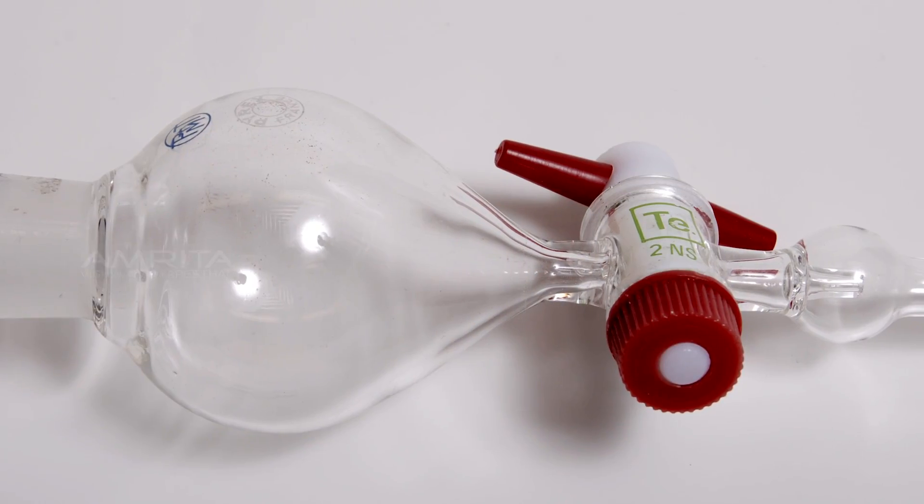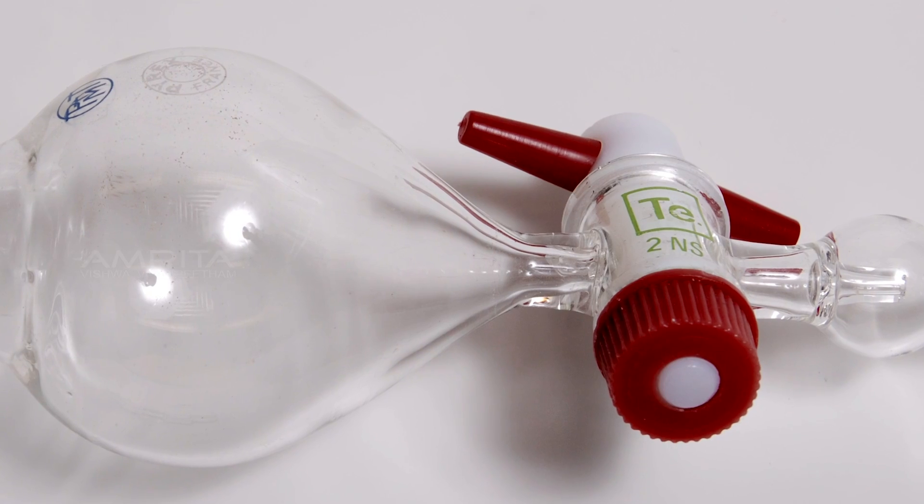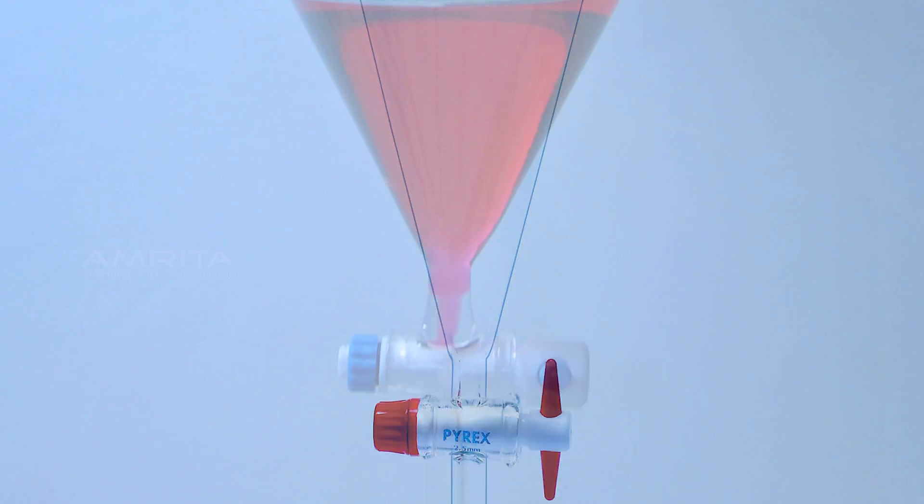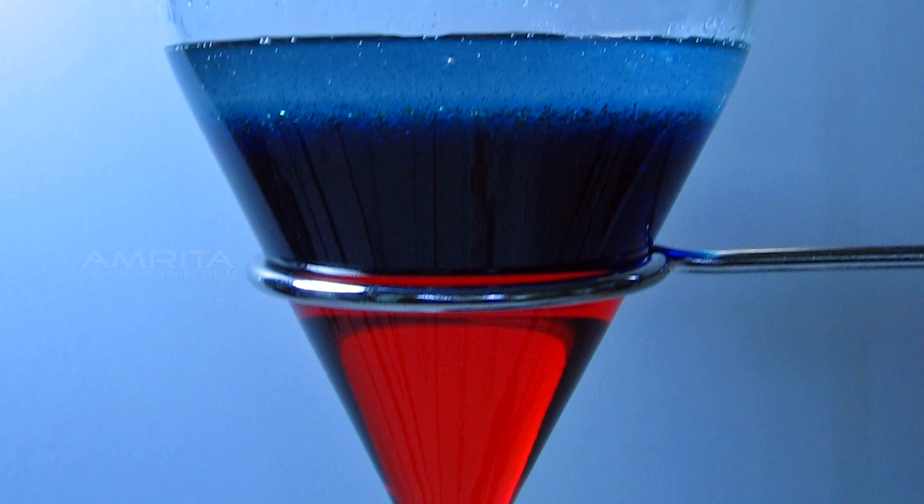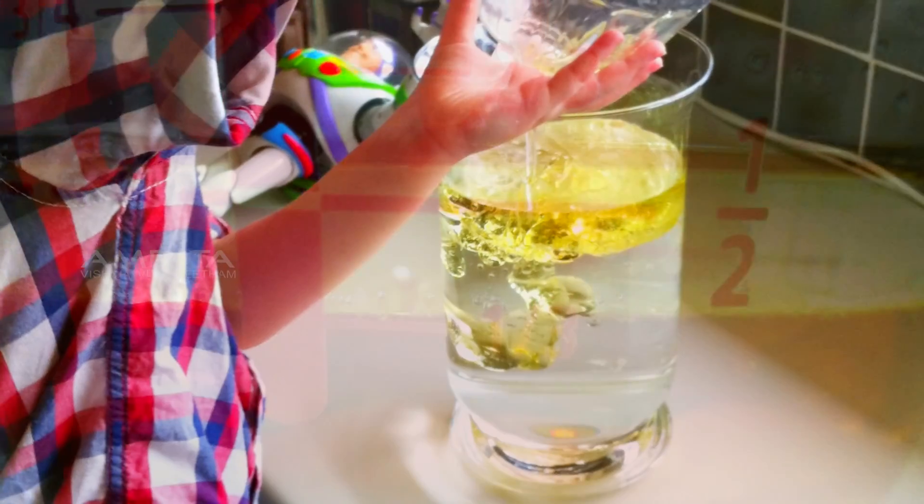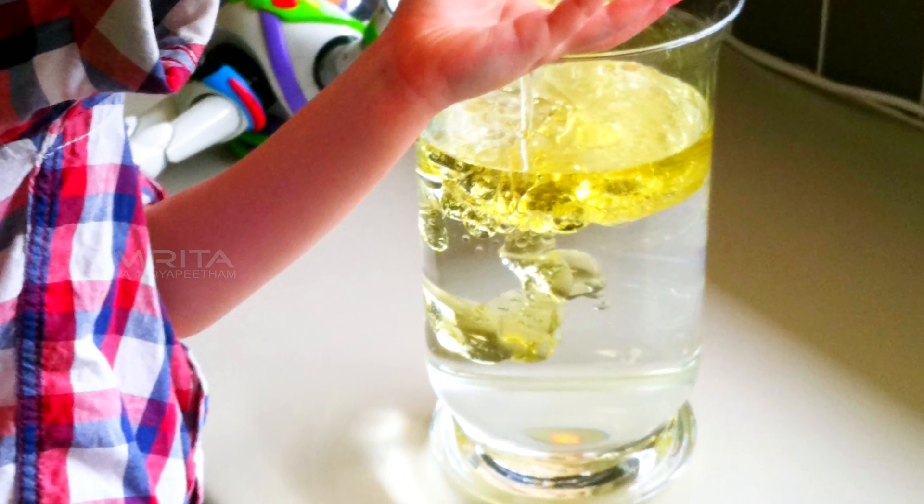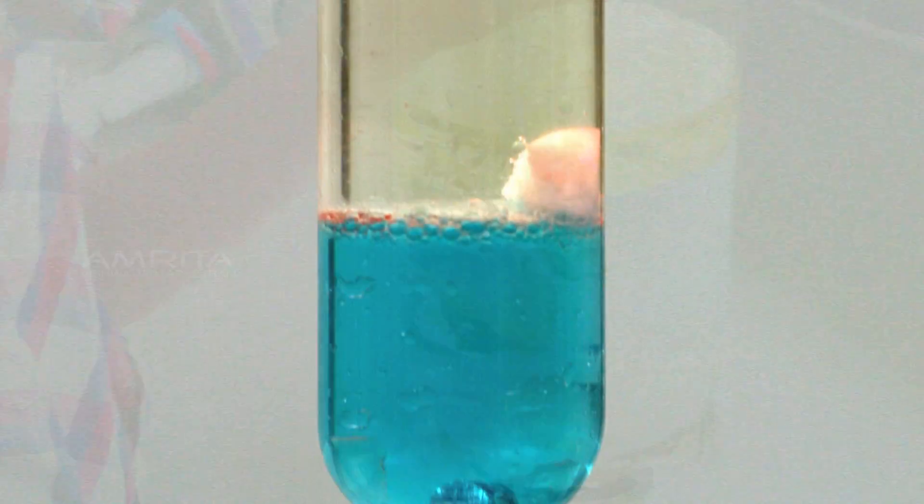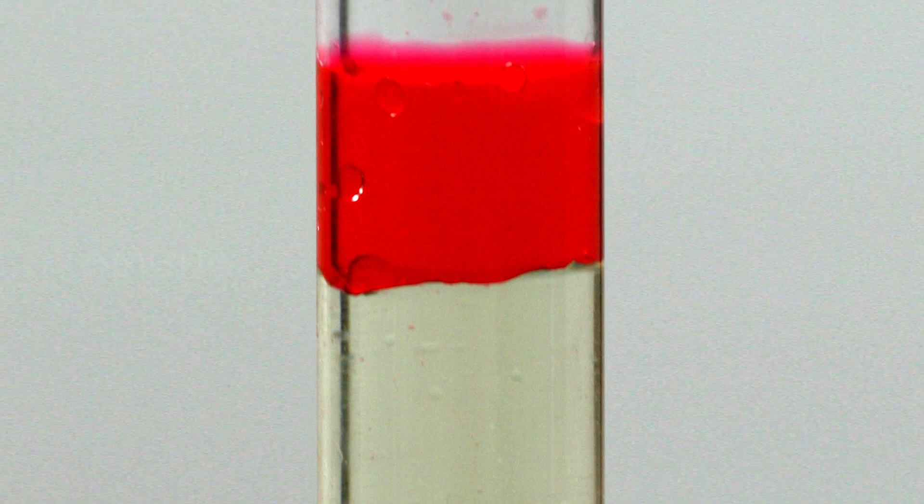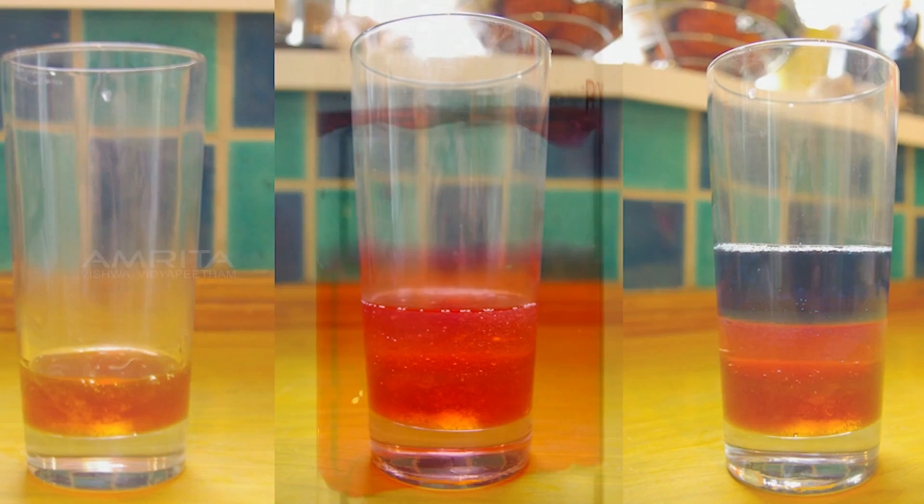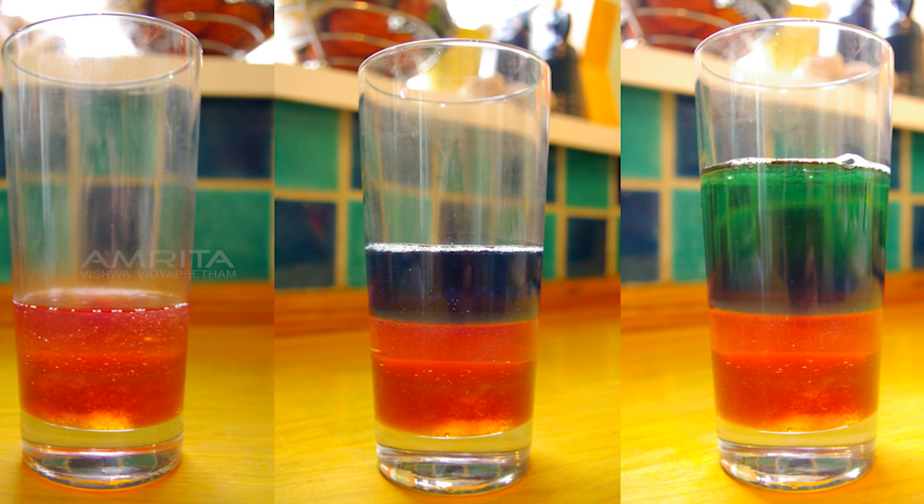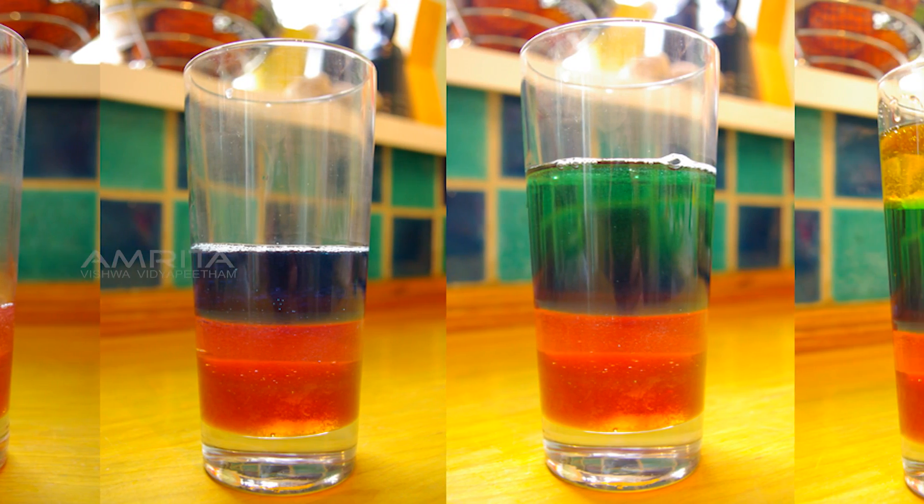Separating funnel is one of the techniques that is used for separating the components of a mixture between two immiscible liquid phases. One phase is the aqueous phase and the other phase is an organic solvent. This separation is based on the difference in the densities of the liquids. The liquid with more density forms the lower layer and the liquid with lesser density forms the upper layer.